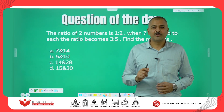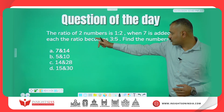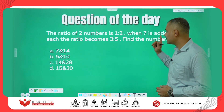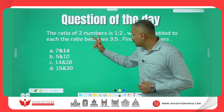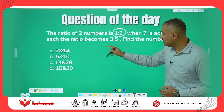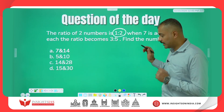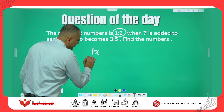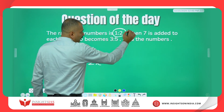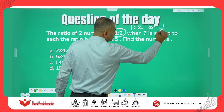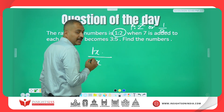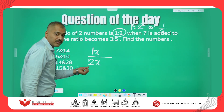And guys, this is today's question. The question says: the ratio of two numbers is 1 is to 2. When 7 is added to each, the ratio becomes 3 is to 5. Find those numbers. Let us say the numbers are 1x and 2x. The ratio can be written in the form of 1 is to 2 or 1 by 2, where x is a common factor and gets cancelled.